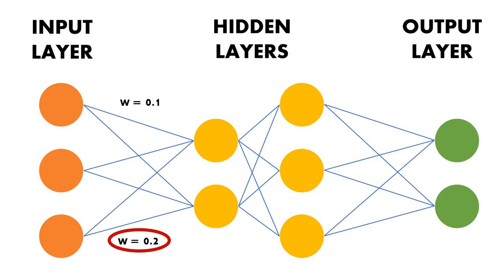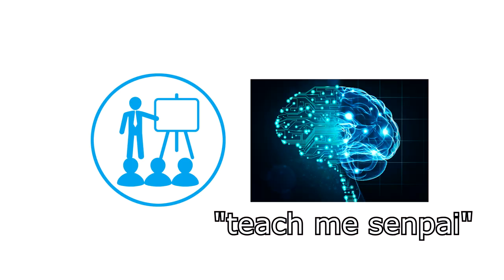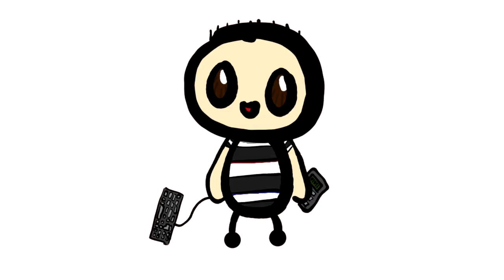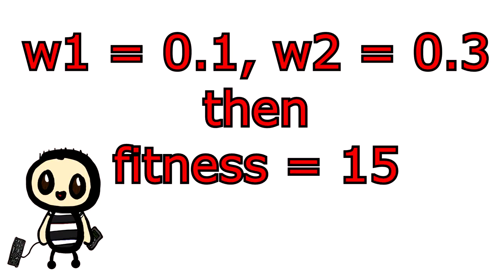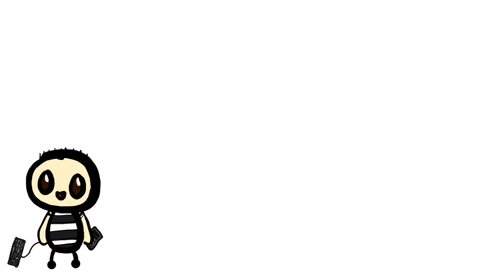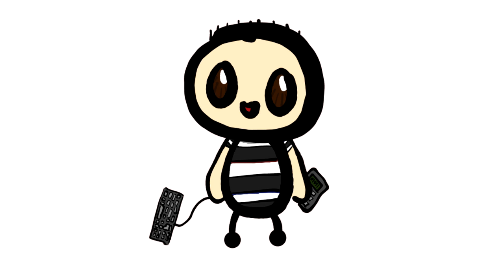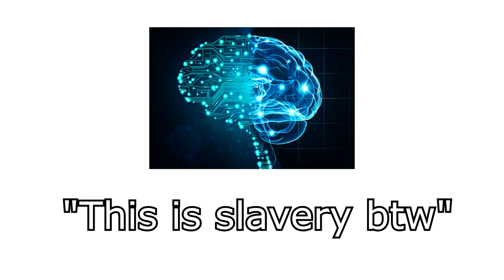You may have heard the term training an AI or training a neural network. This just means tweaking these weights until we get the output with the highest fitness. So, in theory, all the possible outcomes are already calculated. You're just training the AI to check which one is really the best.